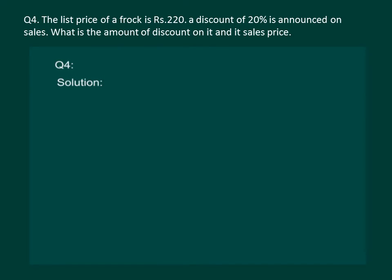Let's take another example. The question says that the list price of a frock is rupees 220, a discount of 20 percent is announced on sales. What is the amount of discount on it and its sale price? Note that marked price and list price are the same thing.